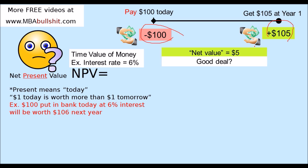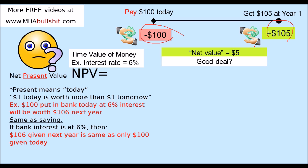Why? Because $100 put in the bank today at 6% interest will be worth $106 next year. That's the same as saying: if bank interest is at 6%, then $106 given next year is the same as only $100 given today. So now that we know that, how do we get the net present value?